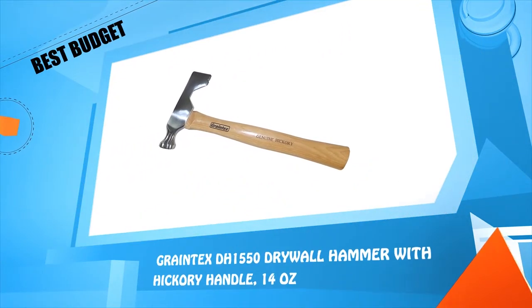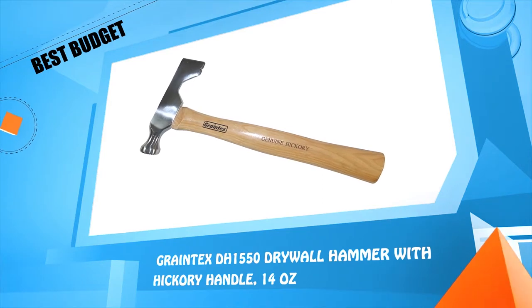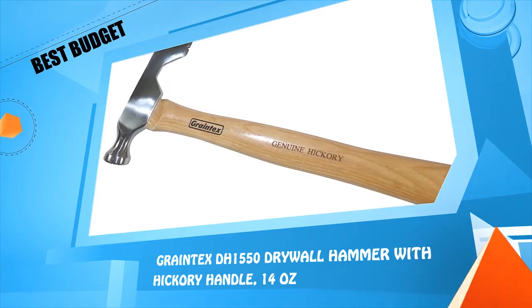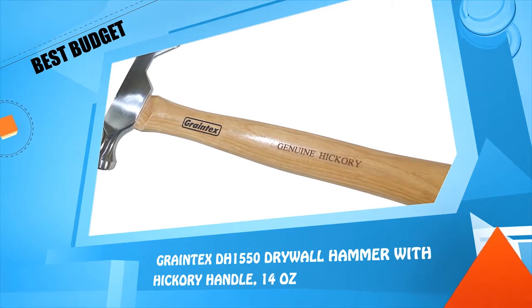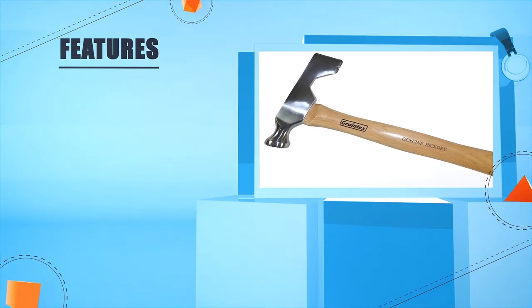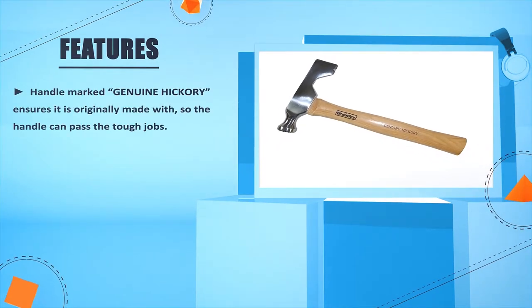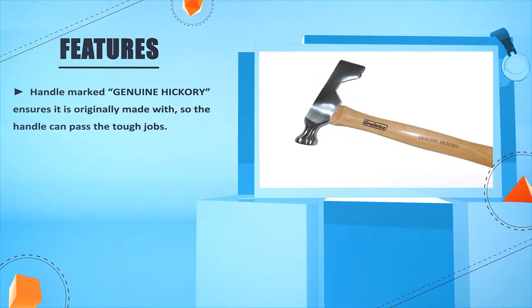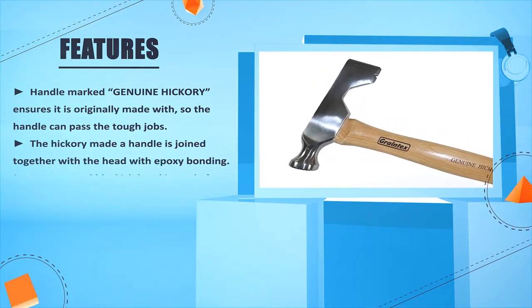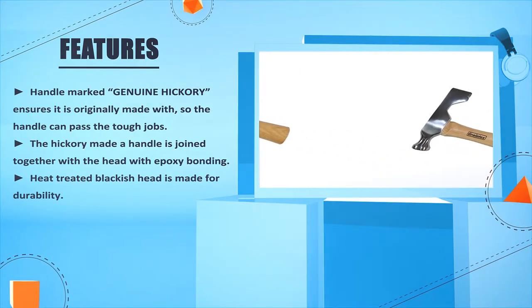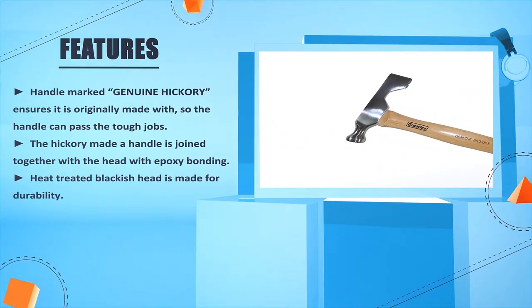Number 3: Grain Tex DH1550 Drywall Hammer with Hickory Handle, 40-ounce. Handle marked Genuine Hickory ensures it is originally made with quality, so the handle can pass the tough jobs. The hickory handle is joined together with the head with epoxy bonding. Heat treated blackish head is made for durability.